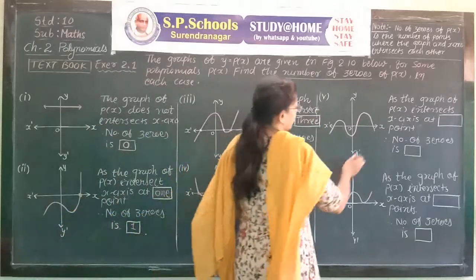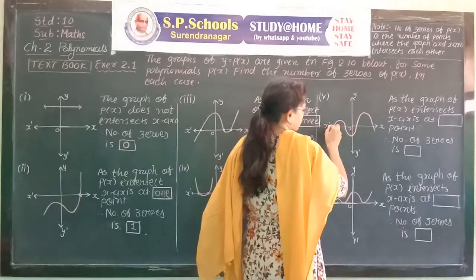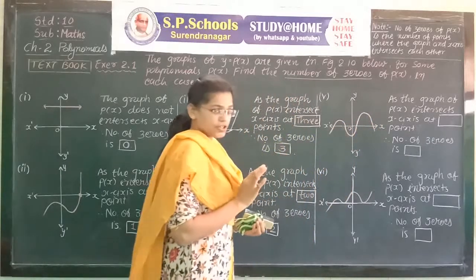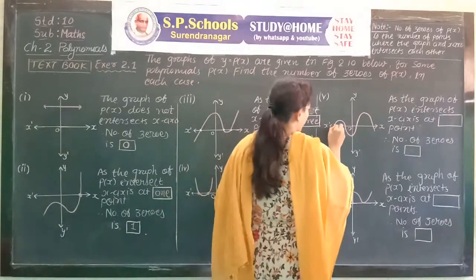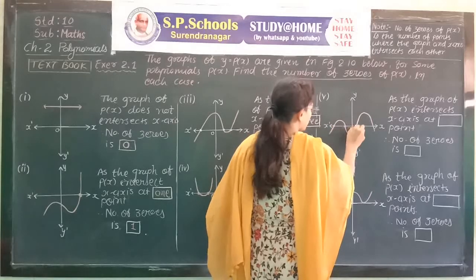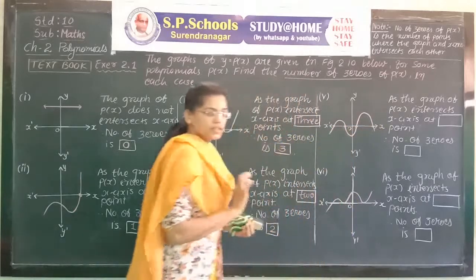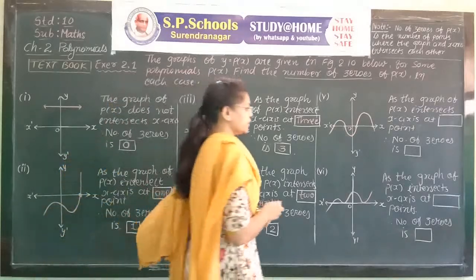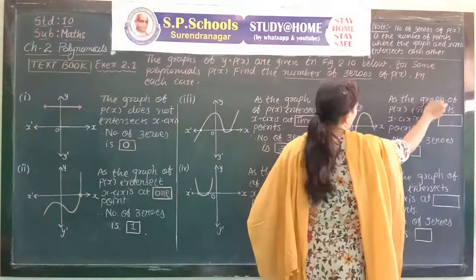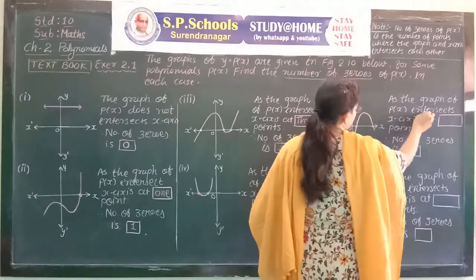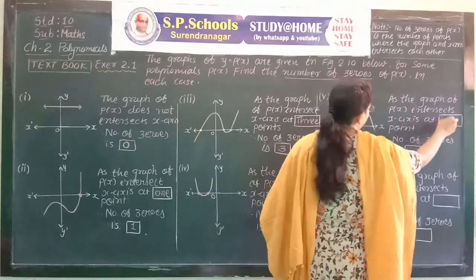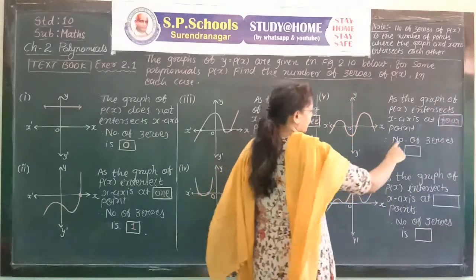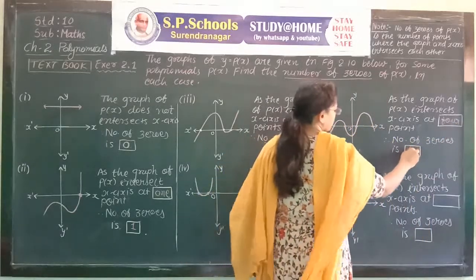Fifth figure: the x-axis and the graph intersect each other at one, two, three, four points. That's why it contains four zeros. As the graph of P(x) intersects the x-axis at four points, therefore the number of zeros is four.